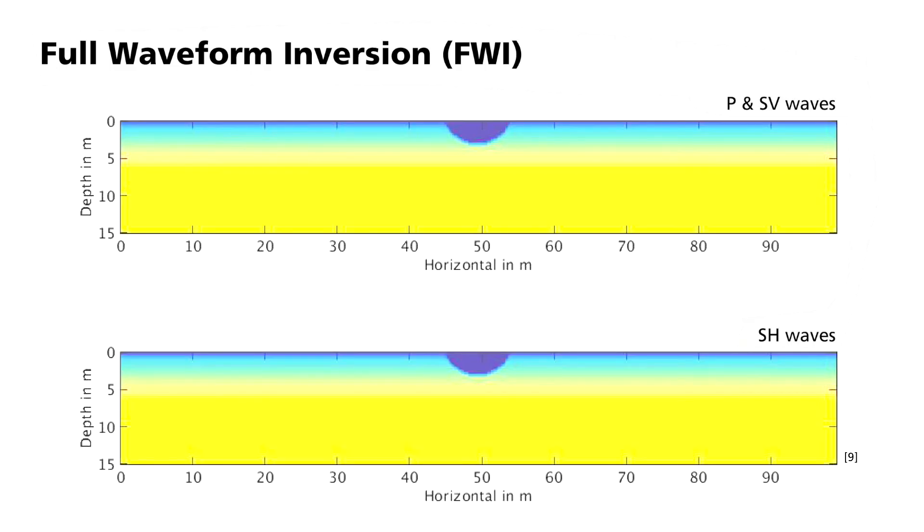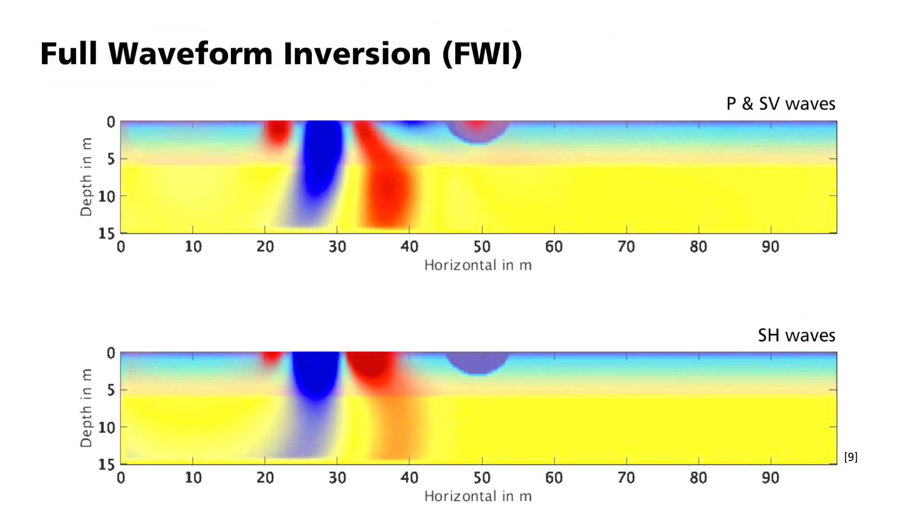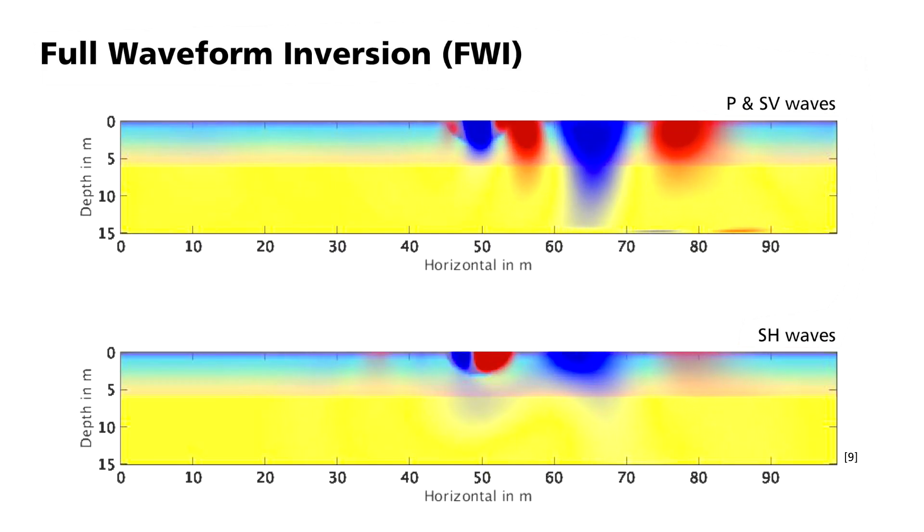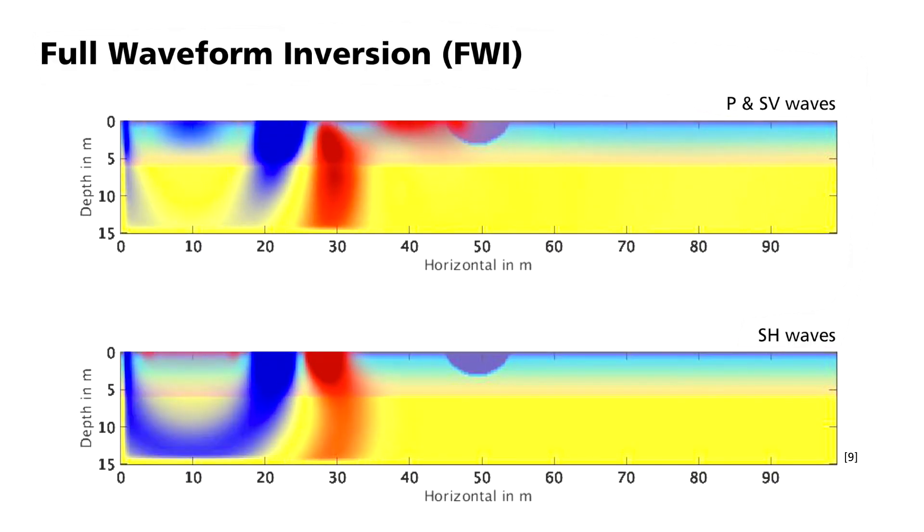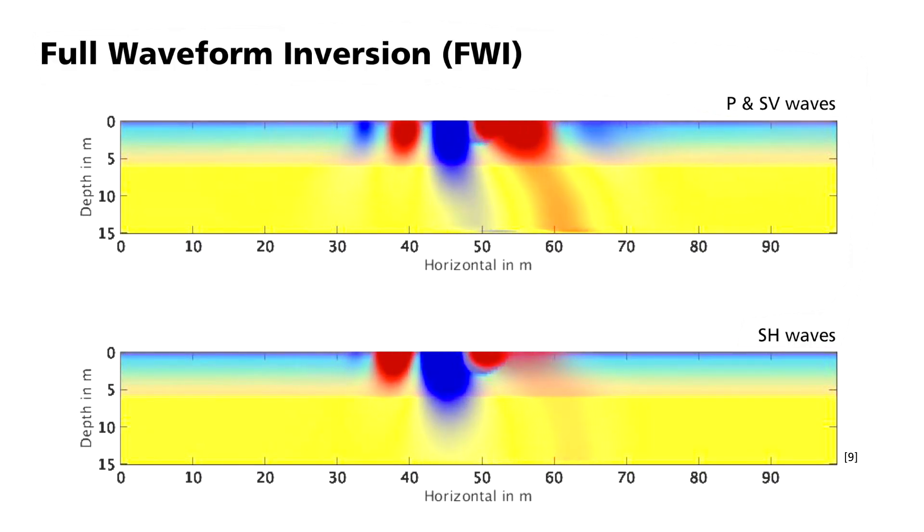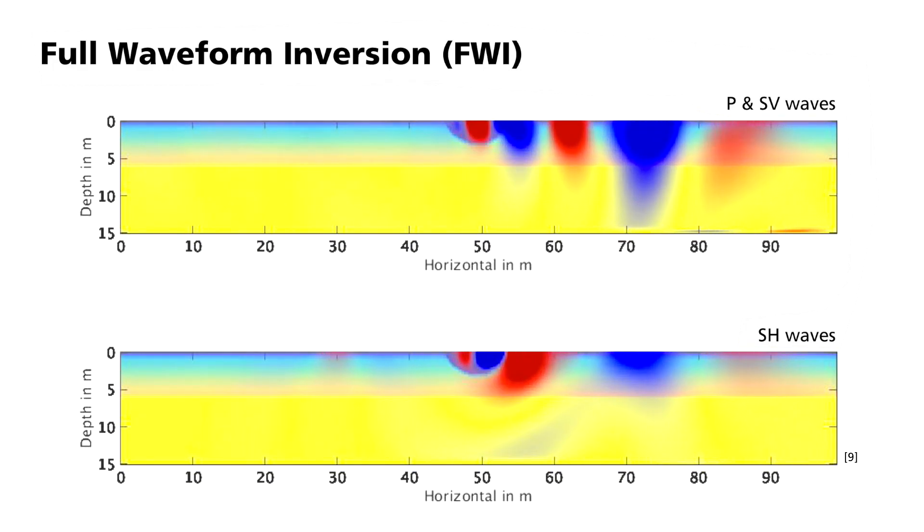For the final velocity model, this animation shows how the waves propagate in the underground. The top image shows p-waves and vertically polarized s-waves, while the lower image shows horizontally polarized s-waves. It can be clearly seen how the waves are influenced by the velocity anomaly of the filled trench and how new waves form there. The animation visualizes what happens in the background during the inversion process, the calculation of the wave field in the specified subsurface model.